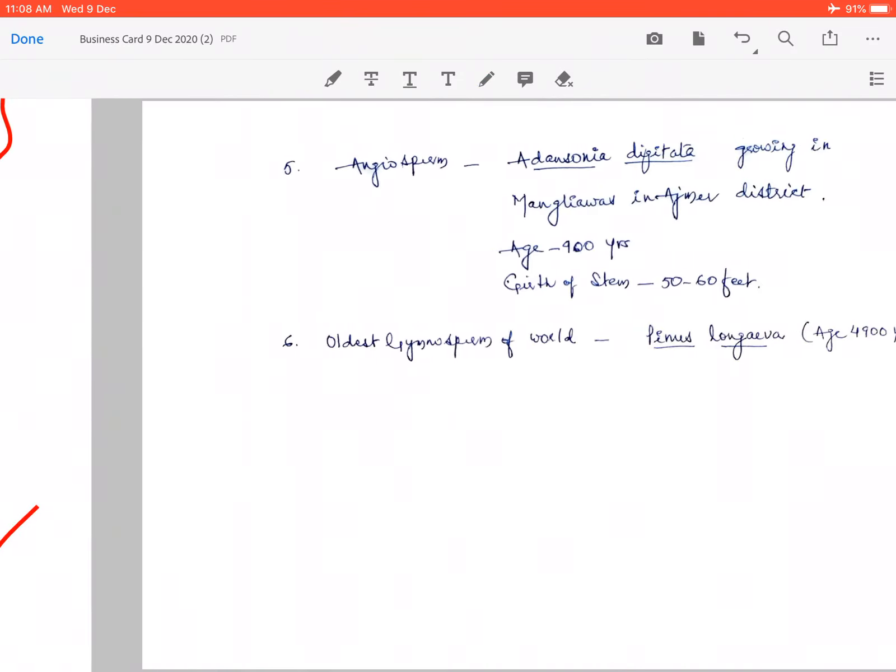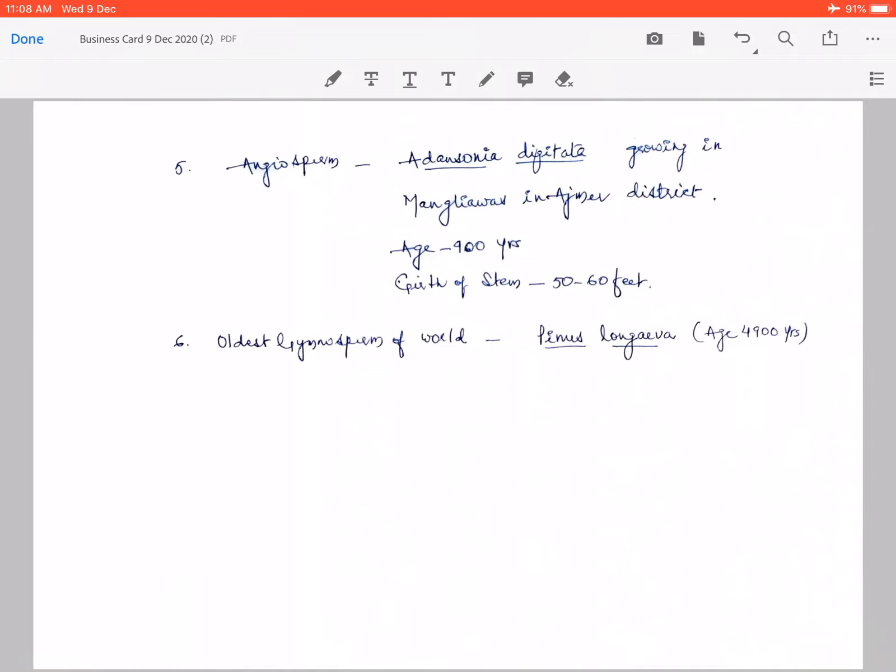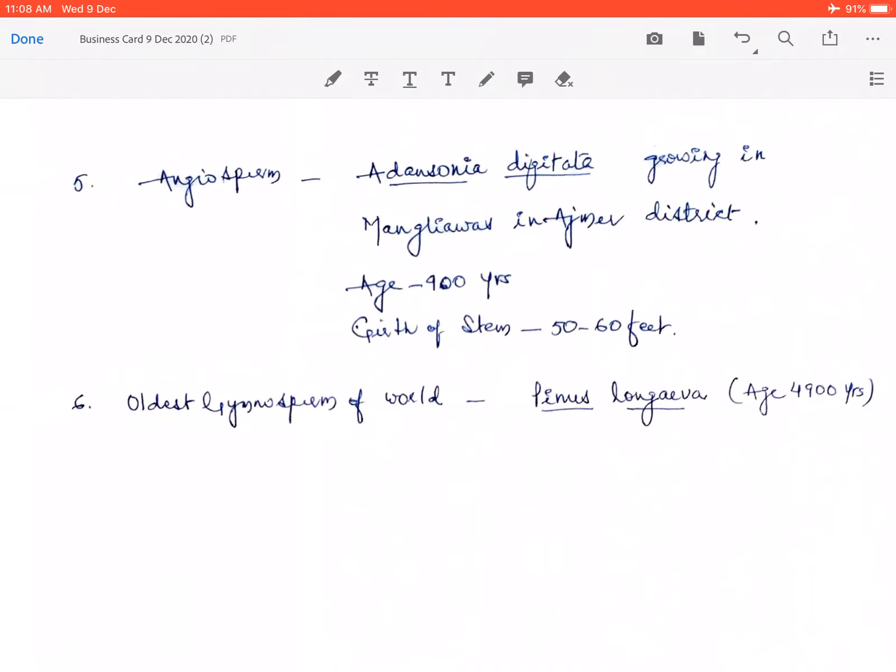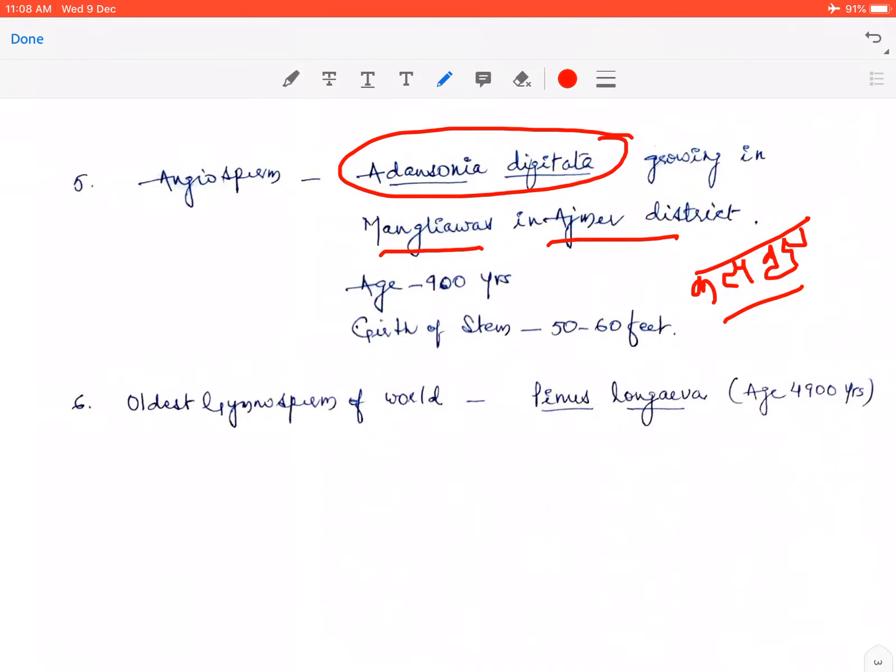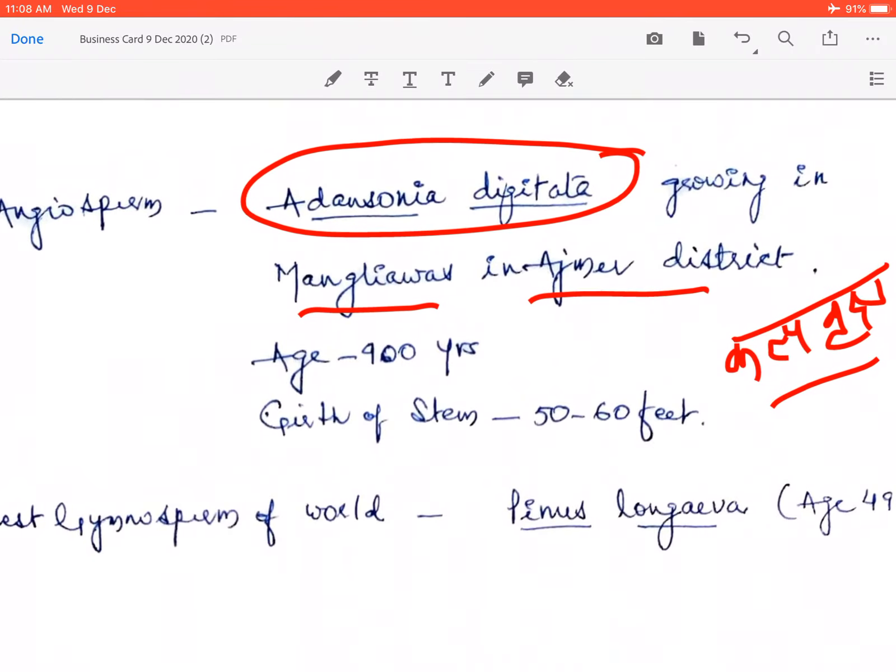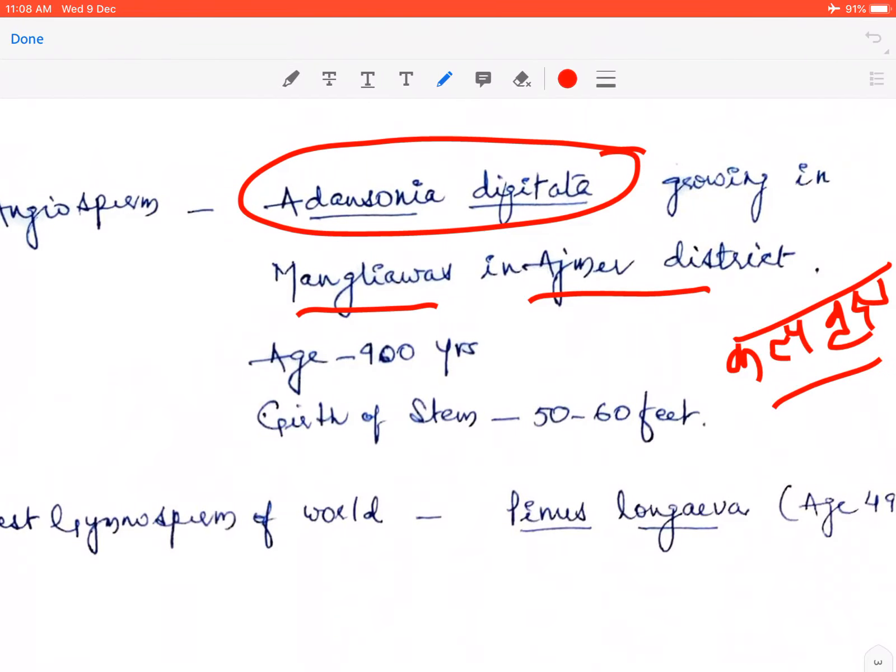Toh iske baad hum baat karenge ek aur angiosperm ki jiska naam hai Adansonia digitata, ya jise kalp vriksh bhi kaha jata hai. Aap ne sab ne naam suna hai kalp vriksh. Ye jo kalp vriksh hai ye Ajmer zile ke Mangliawas mein ugha hua hai aur iska botanical name hai Adansonia digitata.